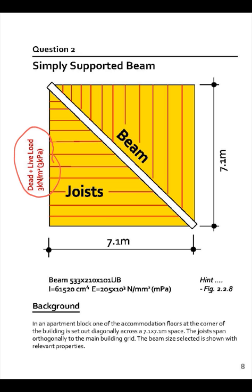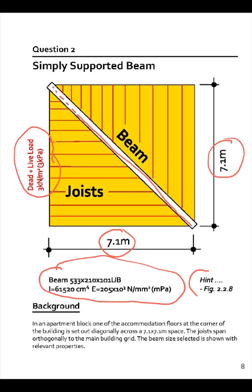Question 2. This is where we have a beam with a loading of 3kN per meter squared. That's dead and live load. It's got bay widths of 7.1 meters and the beam is located diagonally across. The beam is a 533x102 universal beam which is a British section and it's figure 2.2.8 where it covers the method.